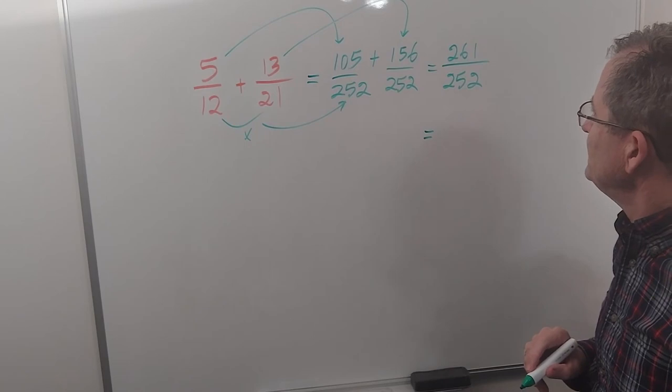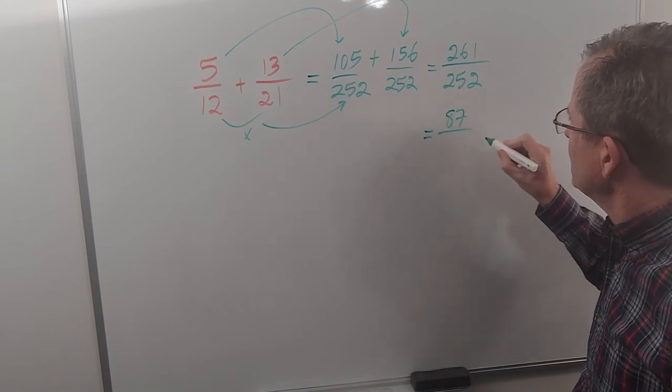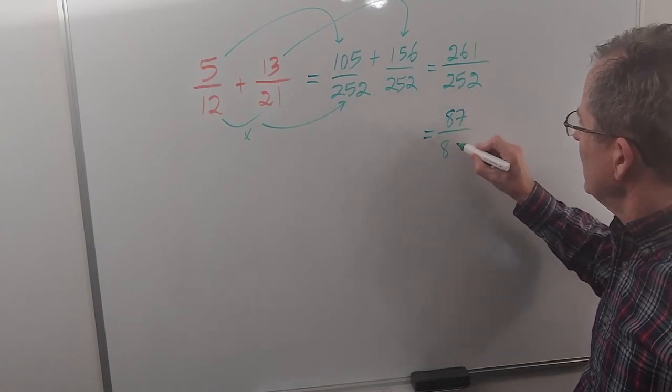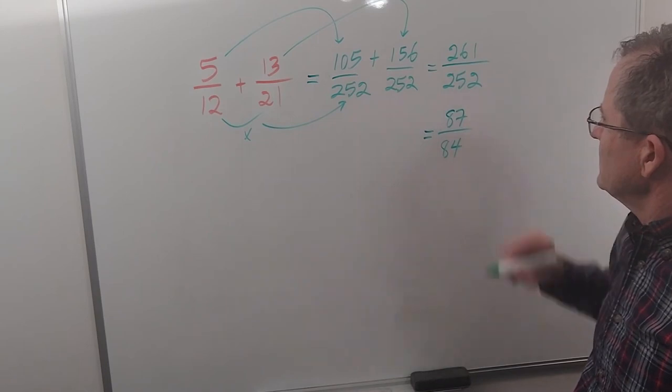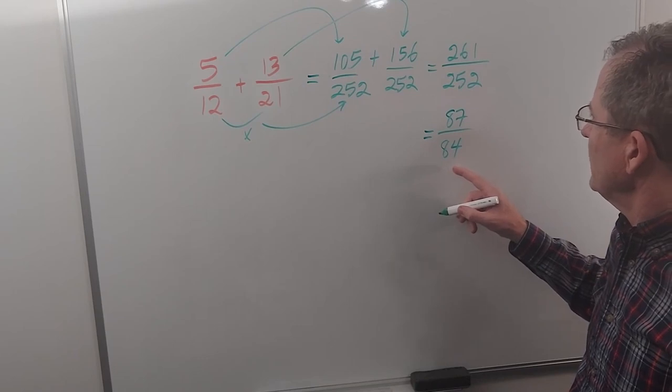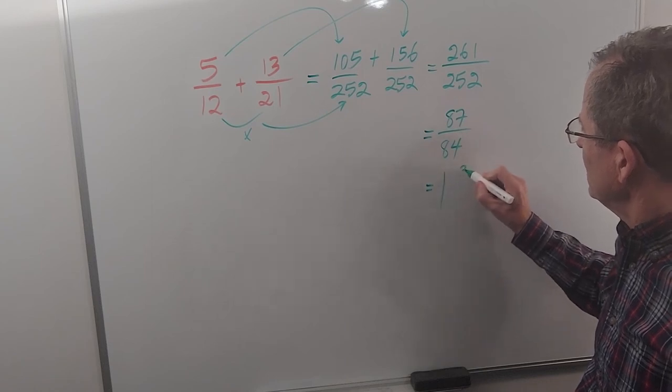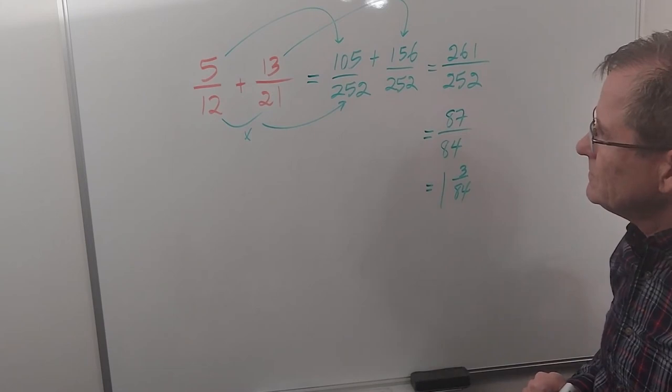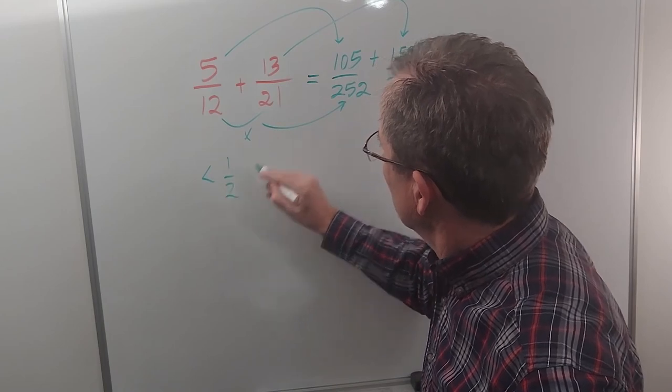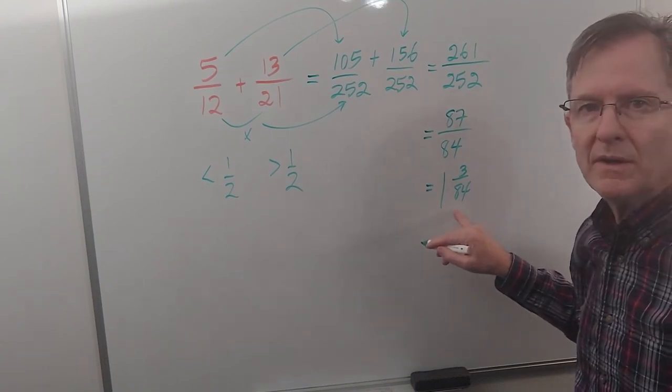261 divided by 3: 270 divided by 3 would be 90, but it's 9 less, so that'd be 3 less, so 87. And 252, well let's see, 240 is 80, plus 4 more because of the extra 12, so that's 87/84, just a bit bigger than 1. 1 and 3/84. So let's see, this is a little bit less than half, this is more than half. If you add them up, it turns out you get a little bit more than 1, so it's in the right ballpark. Everything makes sense.